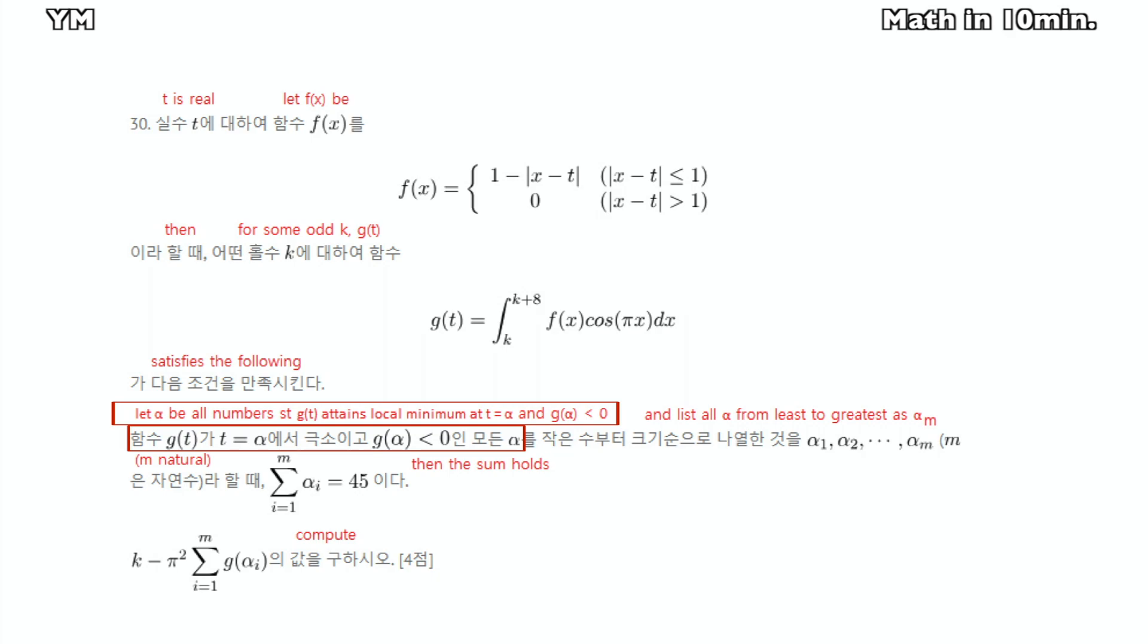Alpha is all numbers such that gt attains a local minimum at t equals alpha. And alpha1 to alpham are all possible alphas listed from least to greatest, where m is a positive integer.